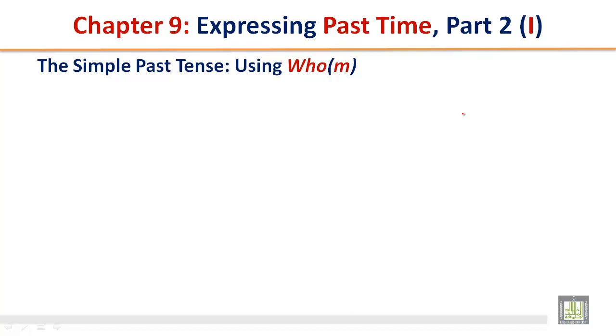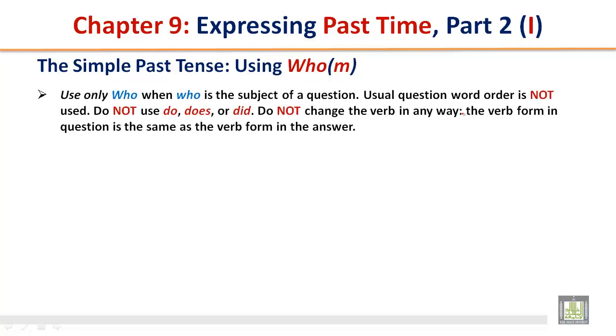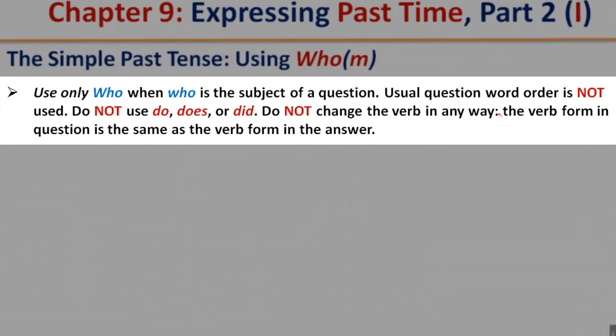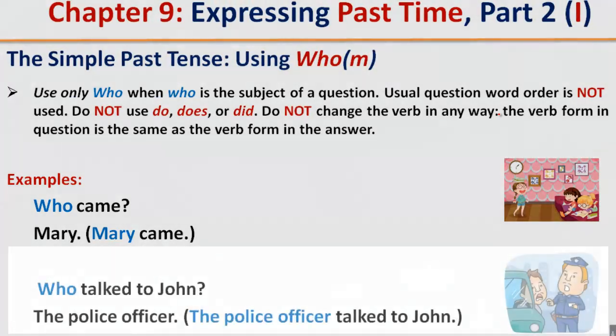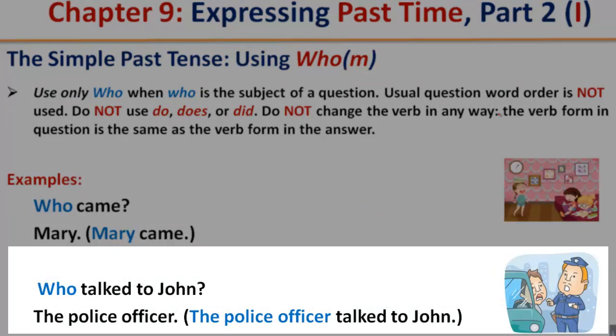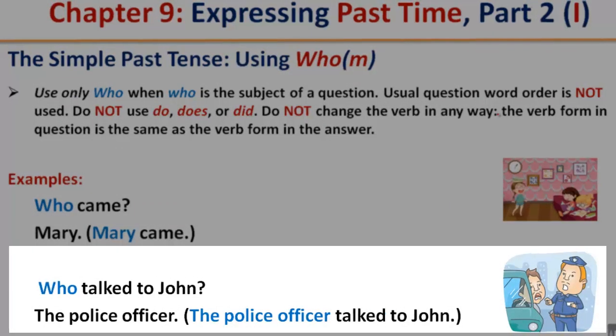The simple past tense using who or whom. Use only who when who is the subject of a question. Usual question word order is not used. Do not use do, does, or did. Do not change the verb in any way. The verb form in question is the same as the verb form in the answer. Who came? Mary. Mary came. Who talked to John? The police officer. The police officer talked to John.